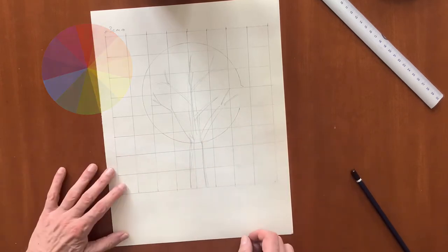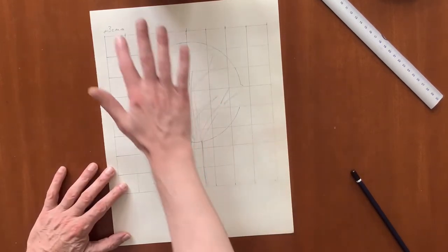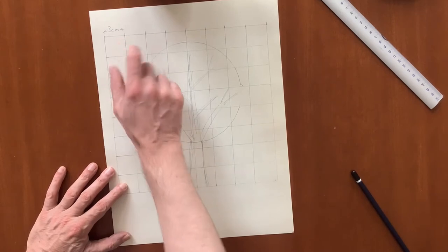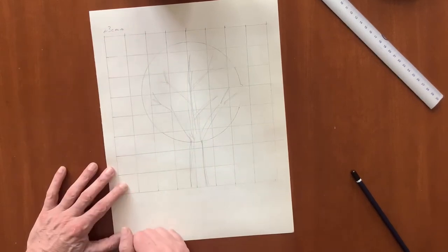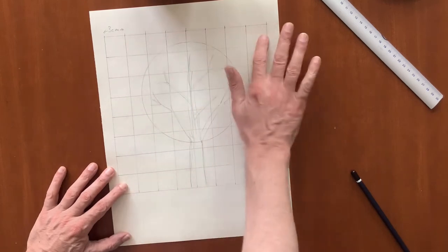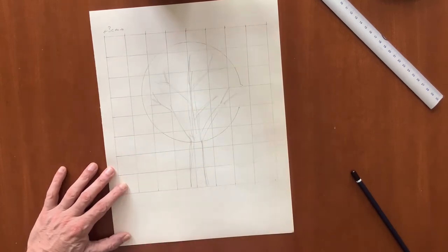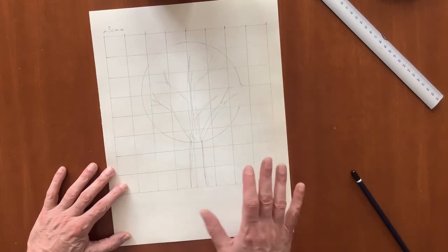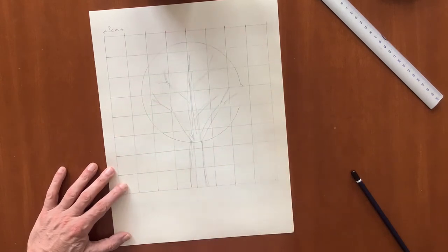As you can see, what you need to do is divide your page or sheet of paper into squares. Now, my squares here are three centimeters wide by three centimeters high, and I have got eight of them across and eight of them down. You can adapt the squares so that they fit on the paper that you are using.